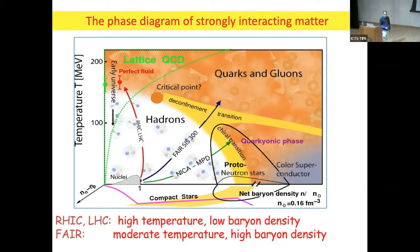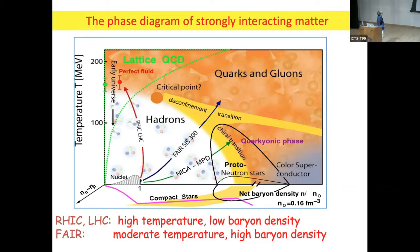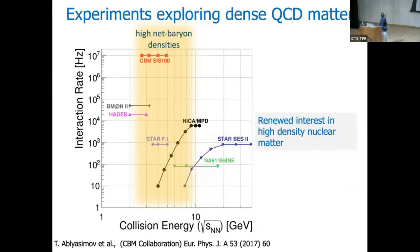The phase diagram has become very crowded. There is a color superconductor, a quarkyonic phase between the quark-gluon plasma and hadronic phase, neutron stars, and all sorts of theoretical structures. This region has drawn renewed attention from the community, which is obvious from the number of experiments coming up.